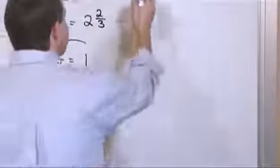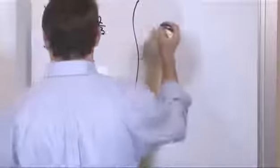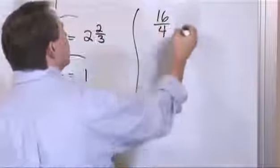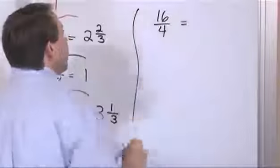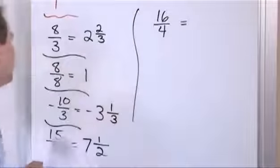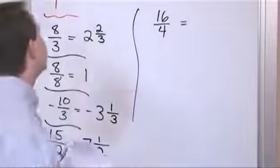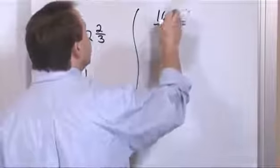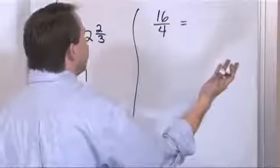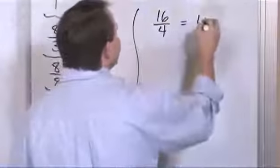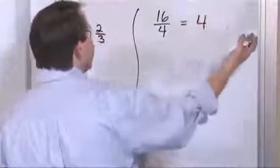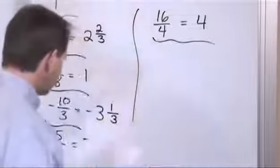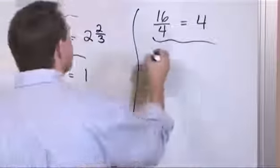What if I have sixteen over four? I divide: sixteen divided by four is four. That's an even number with no remainder, so there's nothing else to write — the answer is just four.